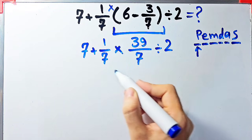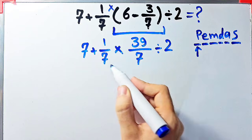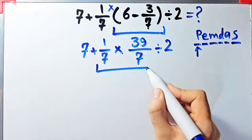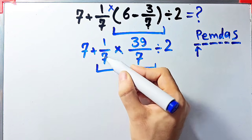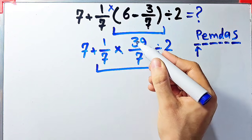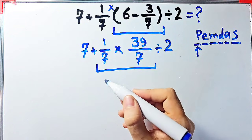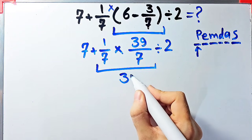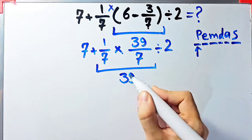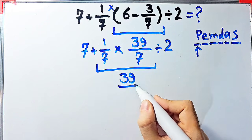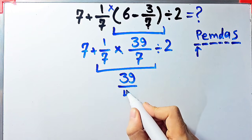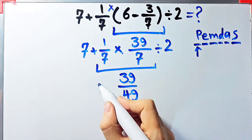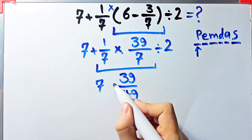In this step we simplify the multiplication: one over seven times thirty-nine over seven. One times thirty-nine equals thirty-nine, and seven times seven equals forty-nine. Now we have thirty-nine over forty-nine.